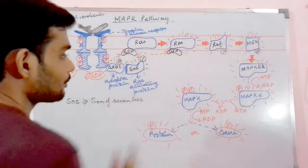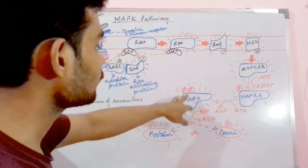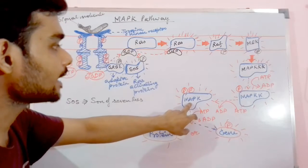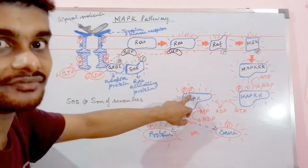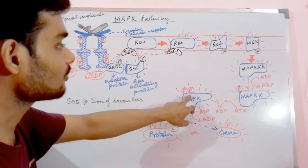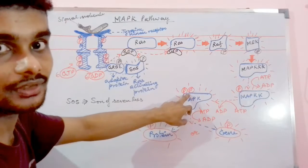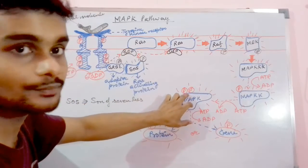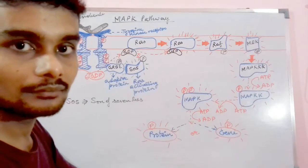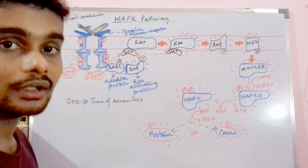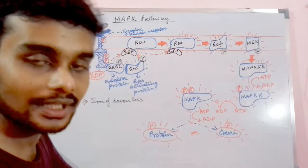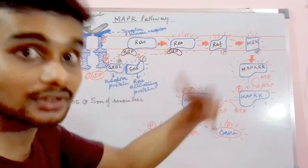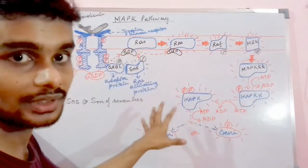The MAP kinase containing two phosphate groups — this is the activated MAP kinase — is subsequently degraded, broken down, or catabolized: the phosphates are removed and the MAP kinase again becomes free for further activation pathway. The phosphate group coming to the protein or gene, due to the action of this activated MAP kinase, is from the ATP molecule.